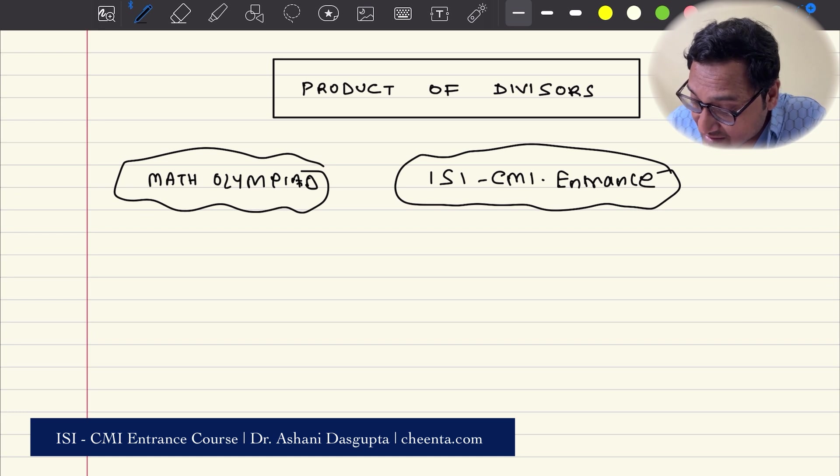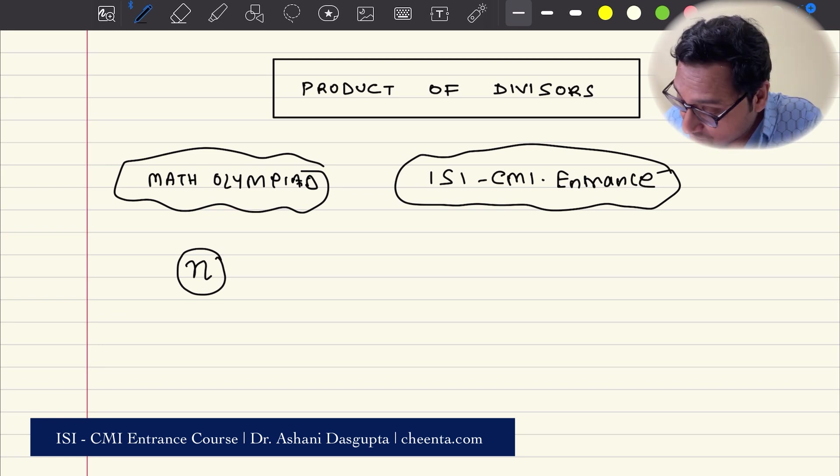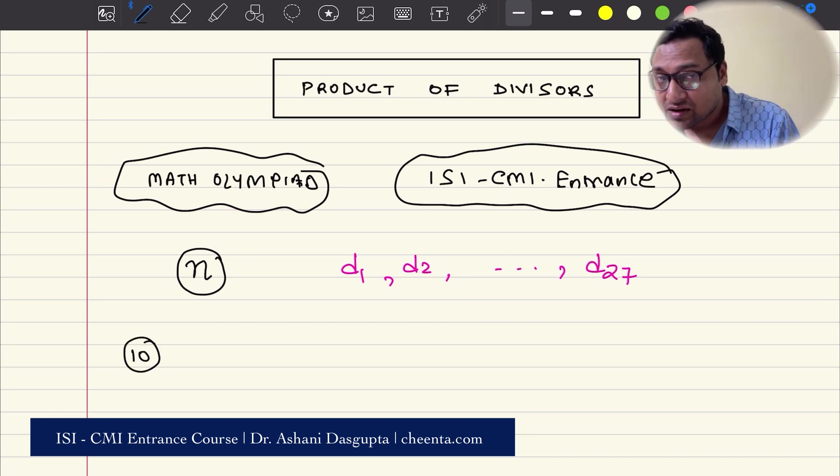It is said that there is a number N with 27 divisors. These are D1, D2, up to D27. This is including 1 and N. Just to clarify, any number, let's say 10, will have some divisors.